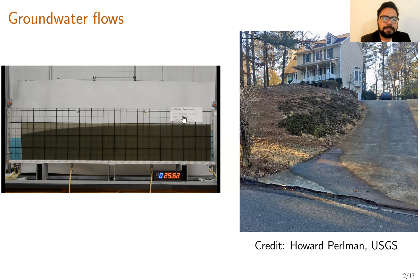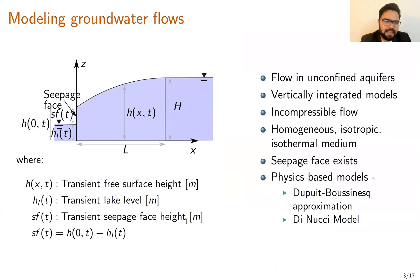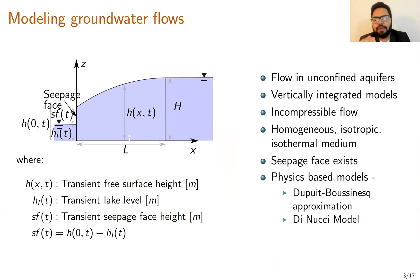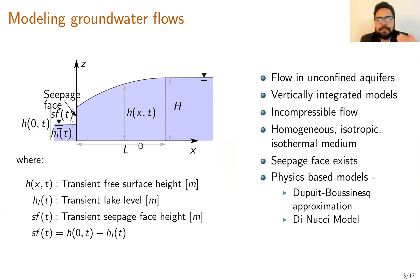This is an interesting problem because it can help us design better hill slopes as well as dams. So let's keep this picture in mind and talk about modeling these groundwater flows. These groundwater flows are typically modeled as flows in unconfined aquifers. Generally, vertically integrated versions of mass and sometimes momentum balances are used. The flow is considered incompressible and the porous medium is considered homogeneous, isotropic, and isothermal.